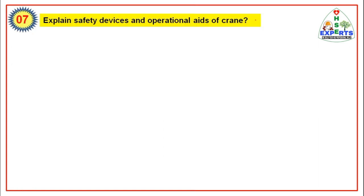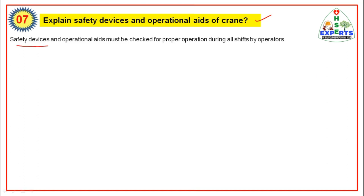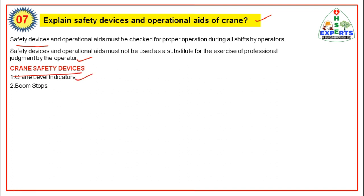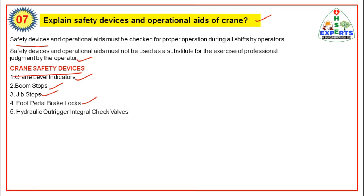Question 7: Explain the safety devices and operational aids of a crane. Safety devices and operational aids must be checked for proper operation during all shifts by operators. They must not be used as a substitute for the exercise of professional judgment by the crane operator. Crane safety devices include: Crane Level Indicators, Boom Stops, Jib Stops, Foot Pedal Brake Locks, Hydraulic Outrigger Integral Check Valves, Rail Clamps on Rail Mounted Devices, and Horn. These 7 points are considered crane safety devices.